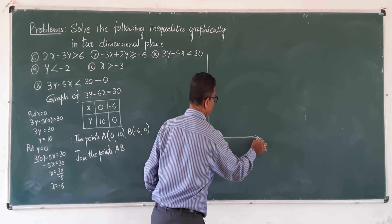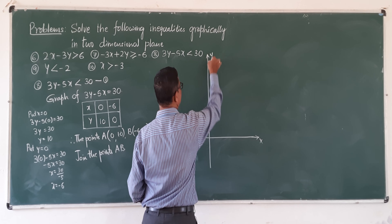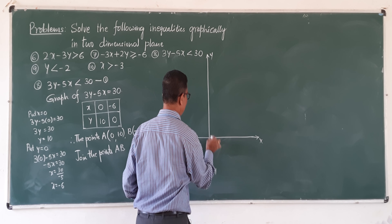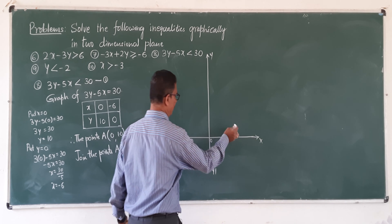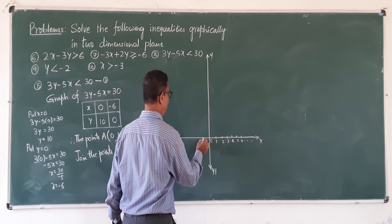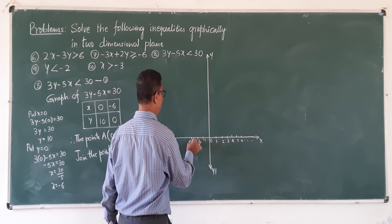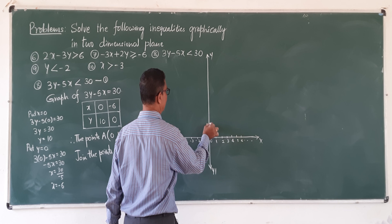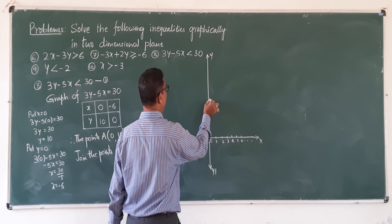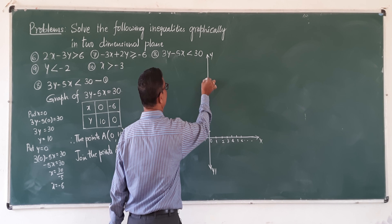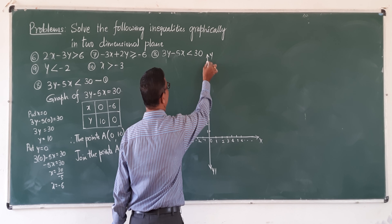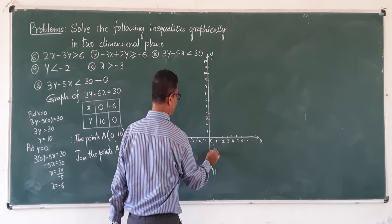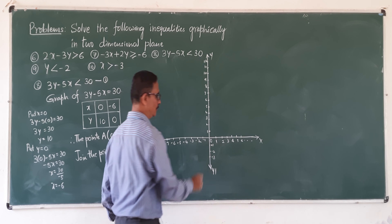This is the negative direction of x-axis, positive direction of x-axis, positive direction of y-axis, negative direction of y-axis. On the right side positive numbers 1, 2, 3, 4, 5, 6 and so on. Left side negative numbers: minus 1, minus 2, minus 3, minus 5, minus 6, minus 7 and so on. Upward direction positive numbers 1 through 12 and so on. Downward negative numbers: minus 1, minus 2, minus 3 and so on.